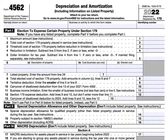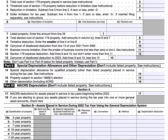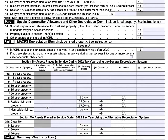I will do my best to create a video specifically drilling down into that particular topic. Before we begin with the form, we're going to go over the six different parts. In Part 1, we'll talk about how to expense property under Section 179. In Part 2, we'll talk about special depreciation allowance and other depreciation. In Part 3, we'll discuss MACRS depreciation, which stands for Modified Accelerated Cost Recovery System — some people pronounce it 'mackers.'